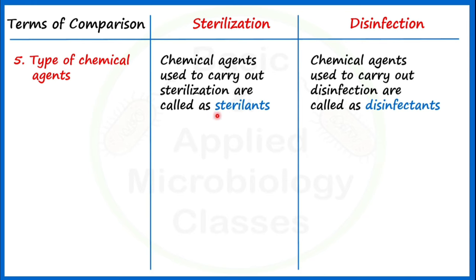Some surgical equipment made up of metal that does not corrode even under moist heat can also be sterilized using an autoclave. These are just one or two examples, but of course the list is long of all those materials decontaminated using sterilization in food, medicine, and research.